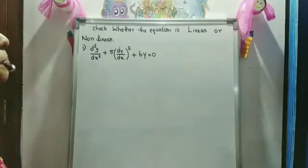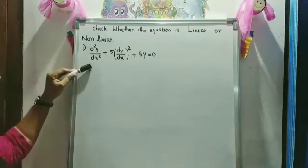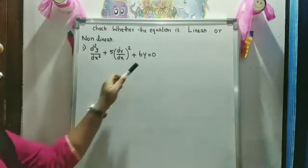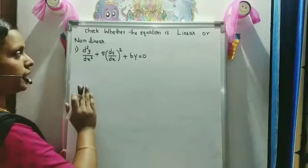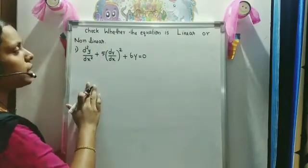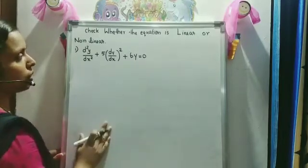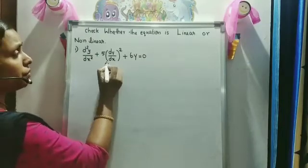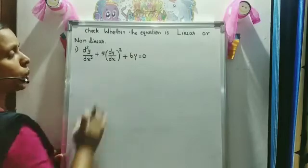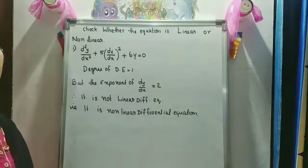Next, consider the equation: d²y/dx² + 5(dy/dx)² + 6y = 0. The degree is 1 since the highest derivative d²y/dx² has exponent 1, and the exponent of the dependent variable is also 1. However, the exponent of the derivative dy/dx is 2 (whole square), so this differential equation is non-linear.